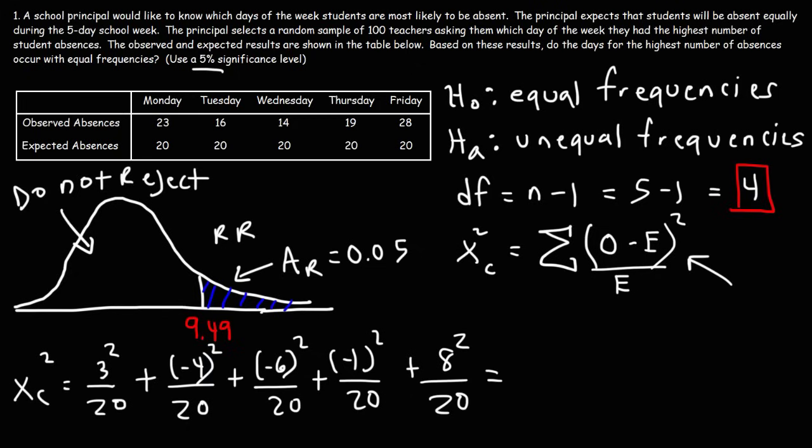And then we just got to do the math. So 3-squared, plus 4-squared, plus 6-squared, plus 1-squared, plus 8-squared, that's 126. So this is 126 divided by 20, which works out to be 6.3.